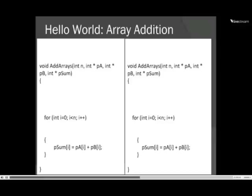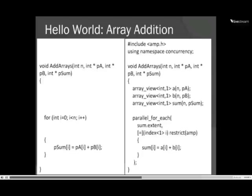Let's look at a simple loop to add two arrays together. We have C-style arrays where we're handed integer pointers PA and PB — the two things we want to add together — and PSUM where we write the answer. We're also given parameter N, the number of elements. We loop from zero while less than N: PSUM at I equals PA at I plus PB at I. The C++ AMP version of this code is not much bigger, and to be clear, this is all of it — nothing is missing.